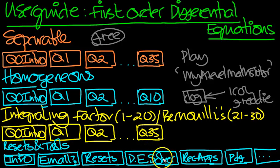Just type in the entries there. Then we go on to after that, we do a section on integrating factor and Bernoulli's. Integrating factor one, the first 20, Bernoulli equations are the last 10, 21 to 30.